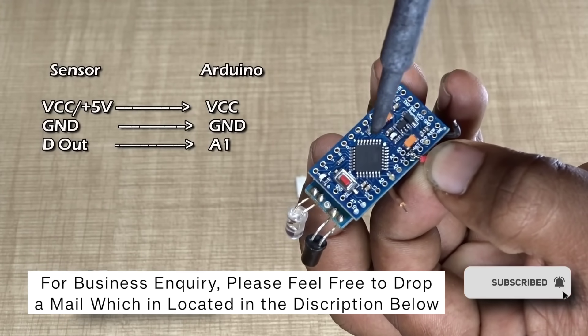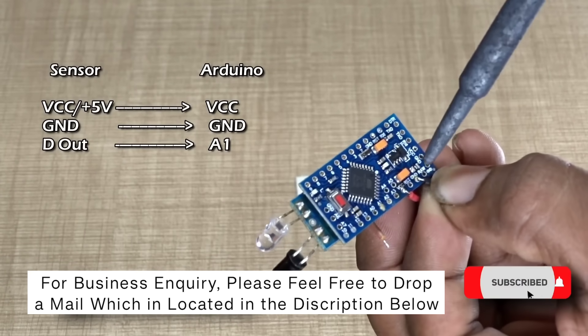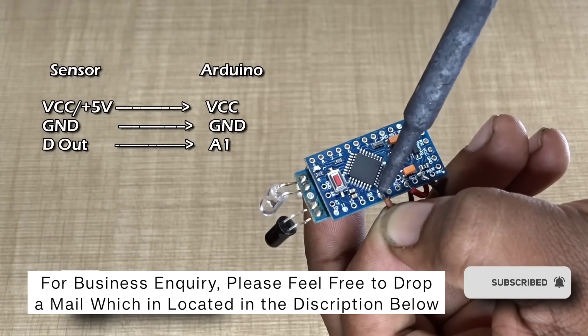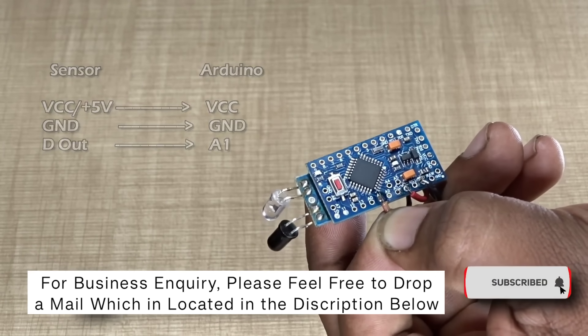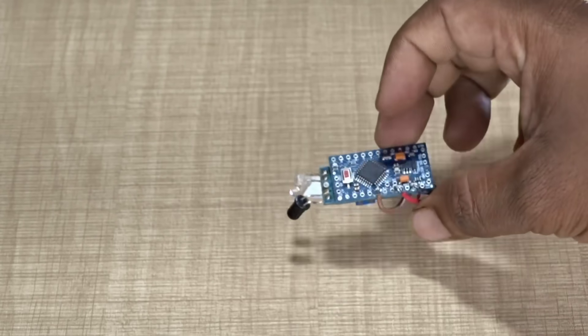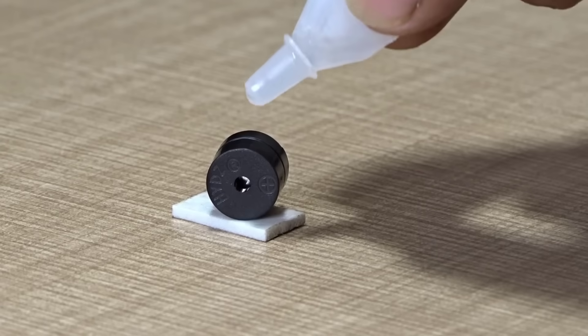Connect the VCC pin to the VCC, which will supply power to the sensor. Next, connect the GND pin of the sensor to the GND pin on the Arduino. Connect the DOUT, data output, pin of the sensor to the A1 analog pin on the Arduino. To ensure a firm and lasting hold,